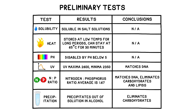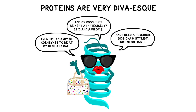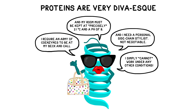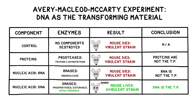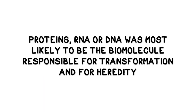These biomolecules can sometimes contain phosphorus and nitrogen, but it's rare. Finally, it precipitated out of solution in alcohol, which also eliminated carbohydrates. While this information was extremely useful, several of the above characteristics could apply to a number of different biomolecules. Proteins, for instance, are notoriously particular about the temperature and pH of their environment, so Avery and his colleagues needed to explore further. Avery, McLeod, and McCarty had previously eliminated carbohydrates and lipids, leaving proteins, RNA, and DNA as the remaining contenders. One of these biomolecules was the component responsible for bacterial transformation and therefore for heredity.